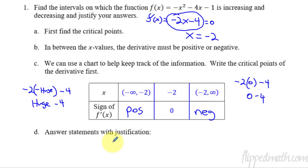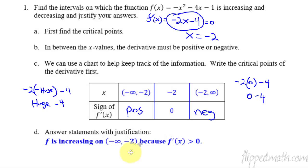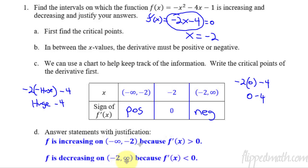Now the answer statements — and this is the important part. f is increasing on the interval negative infinity to negative 2 because f prime of x is greater than 0. In other words, the slope is positive. f is decreasing on the interval negative 2 to infinity because f prime is less than 0. That's the big main point: find the critical points, identify the intervals where f prime could be positive or negative, and write your justification statement.